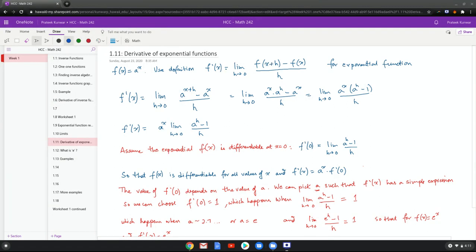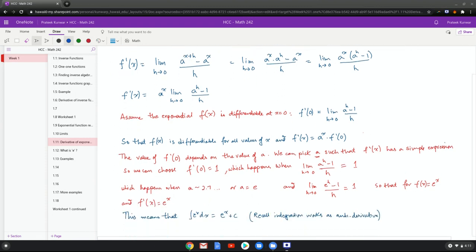Now, assuming that the exponential function is differentiable at x equals zero, that would mean that f prime at zero is the limit as h goes to zero, a to the h minus one over h. And that would actually make this function differentiable for all values of x because then f prime x is just a to the x times f prime of zero. Now what we notice here is that the value of f prime at zero depends on the value of a, which means we can pick an a such that f prime x has a pretty simple expression.